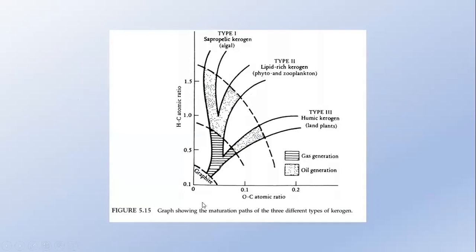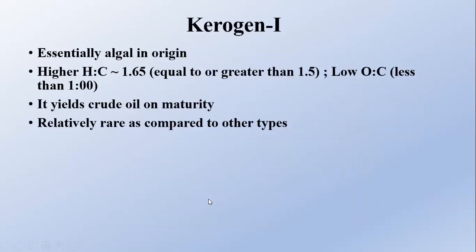If you can see here, where we plot the oxygen to carbon ratio — less than 1 — it yields crude oil. This is the answer: it yields crude oil. This is because it is a different type of kerogen, formed from algae, and it is relatively rare as compared to other types.